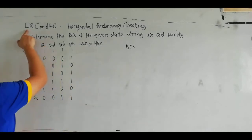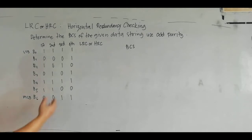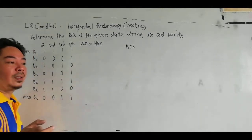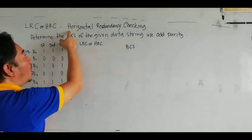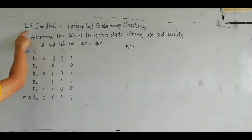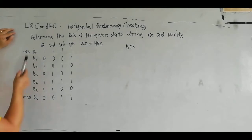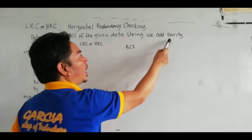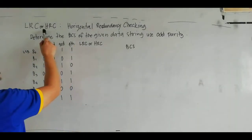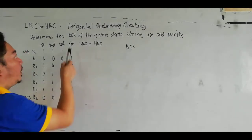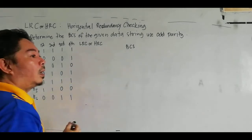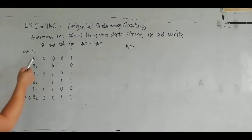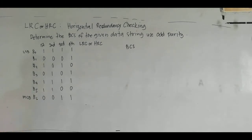Good day everyone. Today's topic is LRC or HRC — another method for error detection. HRC stands for Horizontal Redundancy Checking, also called Longitudinal Redundancy Checking. We have an example problem: determine the BCS of the given data stream and use odd parity for LRC or HRC transmission and error detection. The first data stream is 1010110.